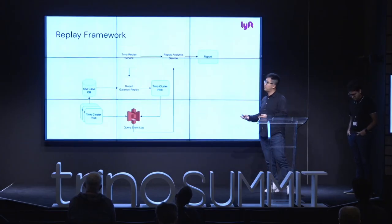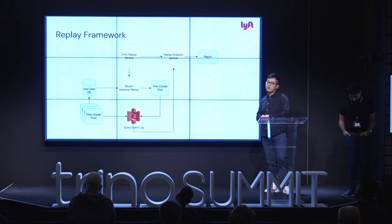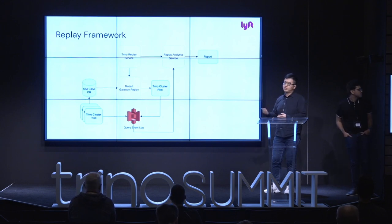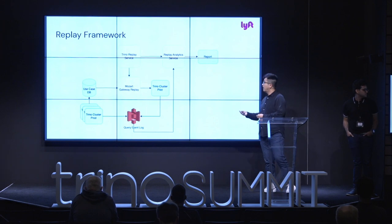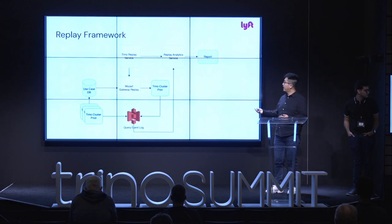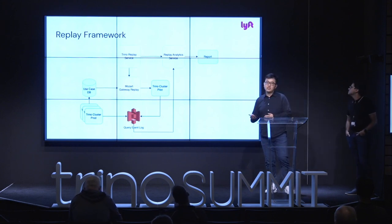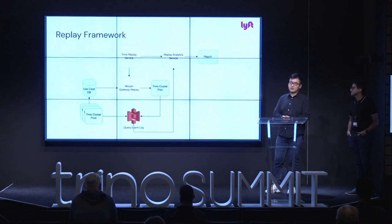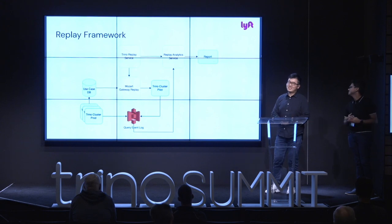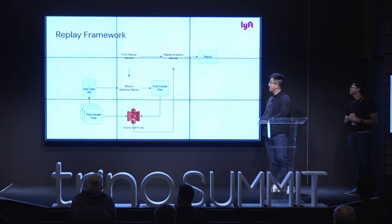We built a replay framework to automate the testing process. It takes production query volume, caches it, and whenever you want to do an upgrade, it replays that volume — or benchmarks — against the new Trino version on a new cluster. A replay analytics service then generates a report so you can easily tell whether the new version has regressions, and whether it's actually as good as promoted — for example, if Starburst says 'we made it 10% faster,' you can verify that with your own workload.